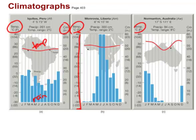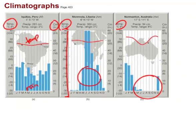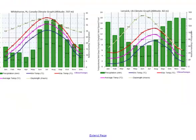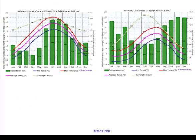Here we have climatographs of three different places, and you can see some pretty interesting differences. For example, look at Australia — notice the lack of rainfall during June, July, August, and September, the summer months. Whereas in Africa there's an incredible amount of rainfall, just the opposite. Here are also climate graphs comparing Whitehorse in the Yukon with Lerwick in the United Kingdom — the bars of precipitation are quite different in the two locations, and so are their temperatures.